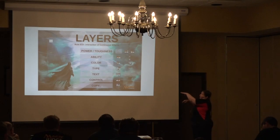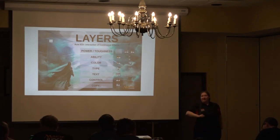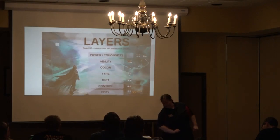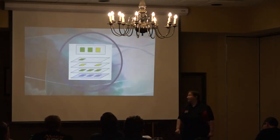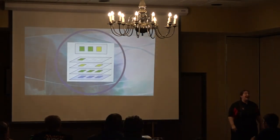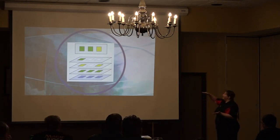Great job — we've gotten all seven of them. Now we're going to put them in order so that we can see how we apply those. The way I've listed it is from the bottom to the top. First layer is copy, then control, text, type, color, ability, power and toughness. Once we get to power and toughness, we do have a little bit more, but we'll get to that in a minute.